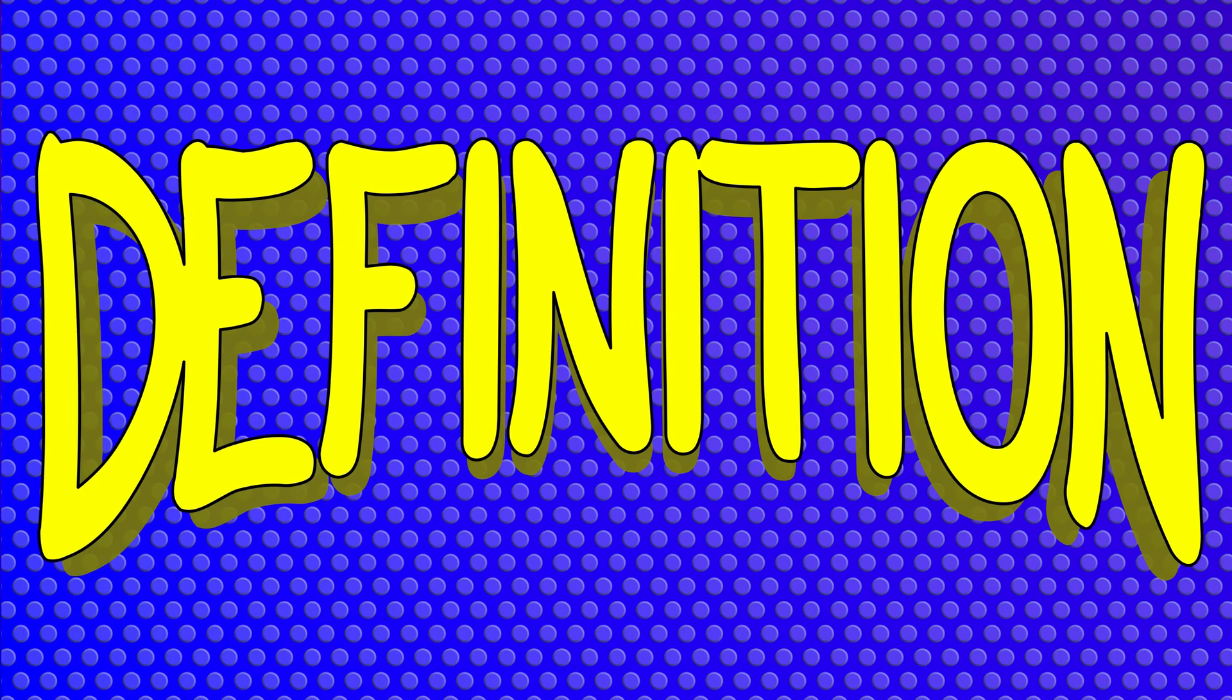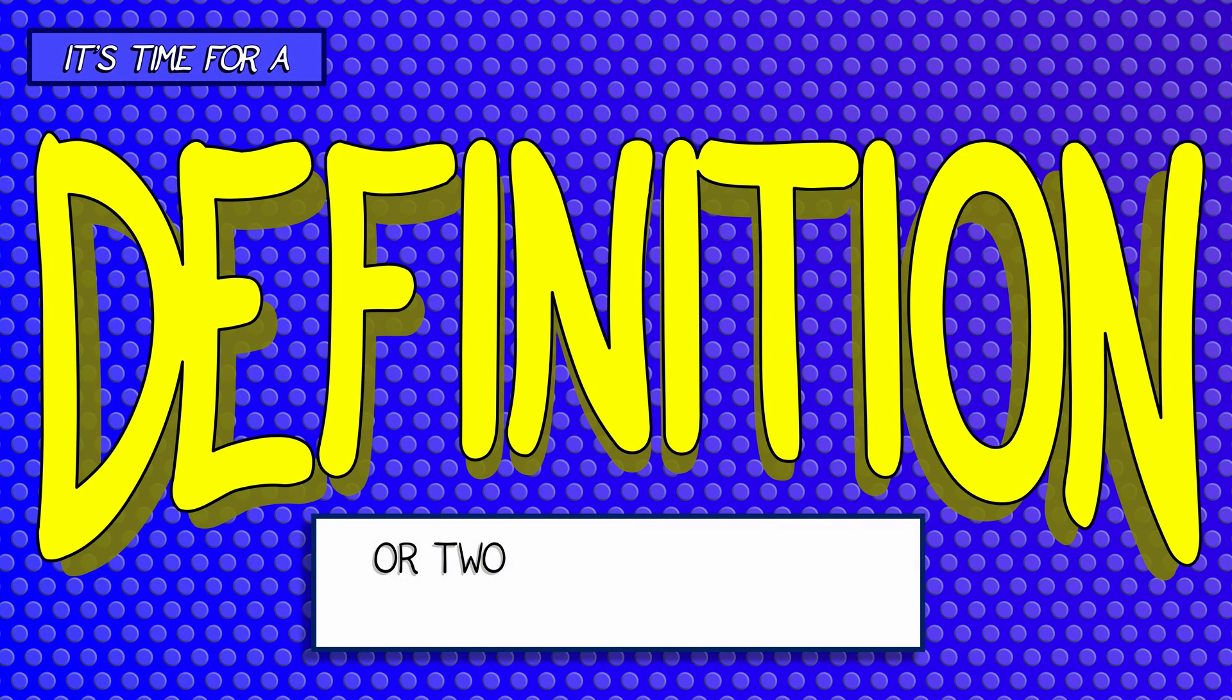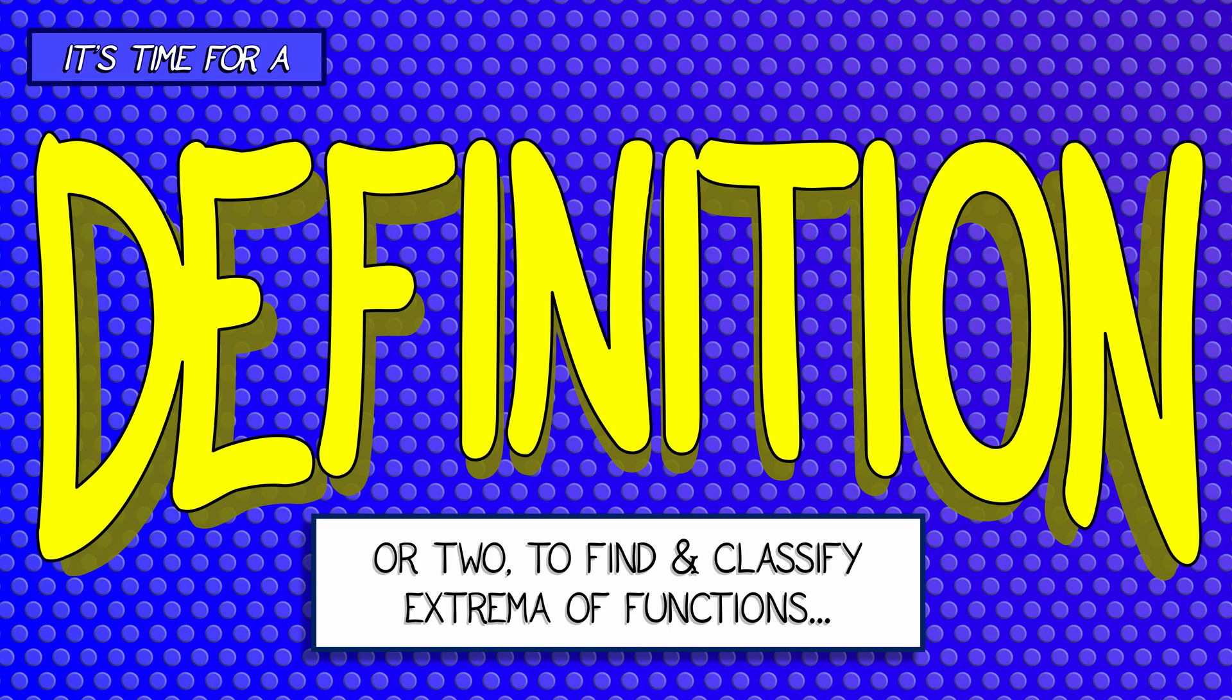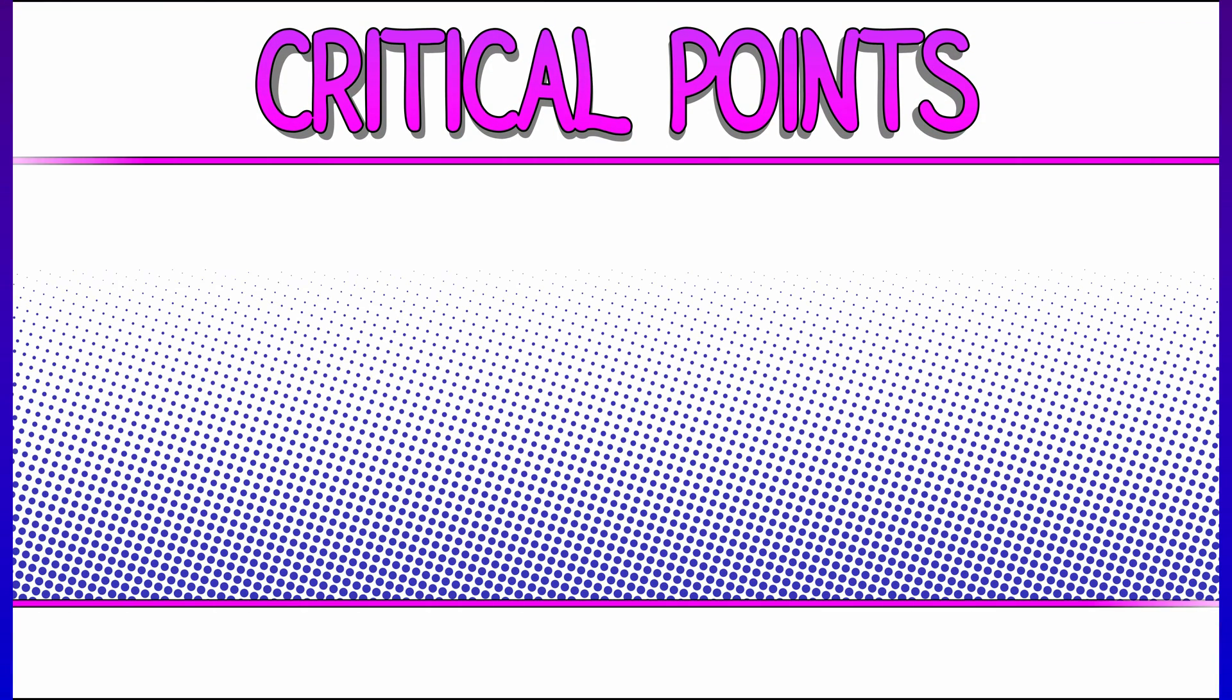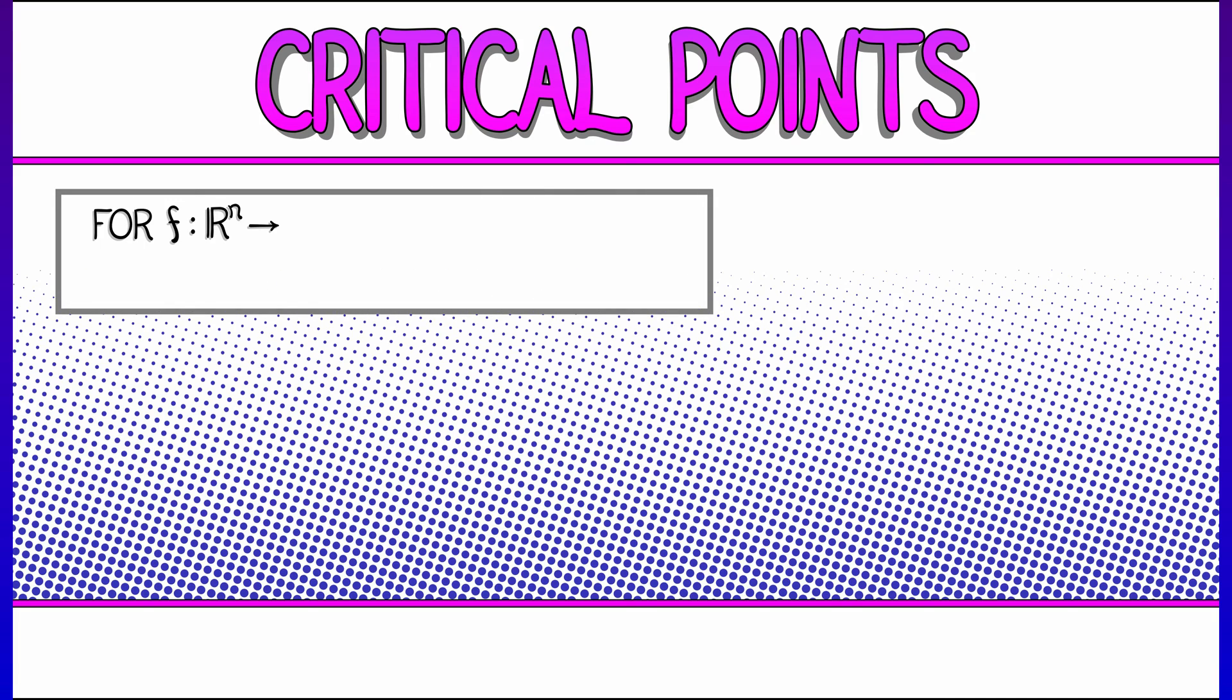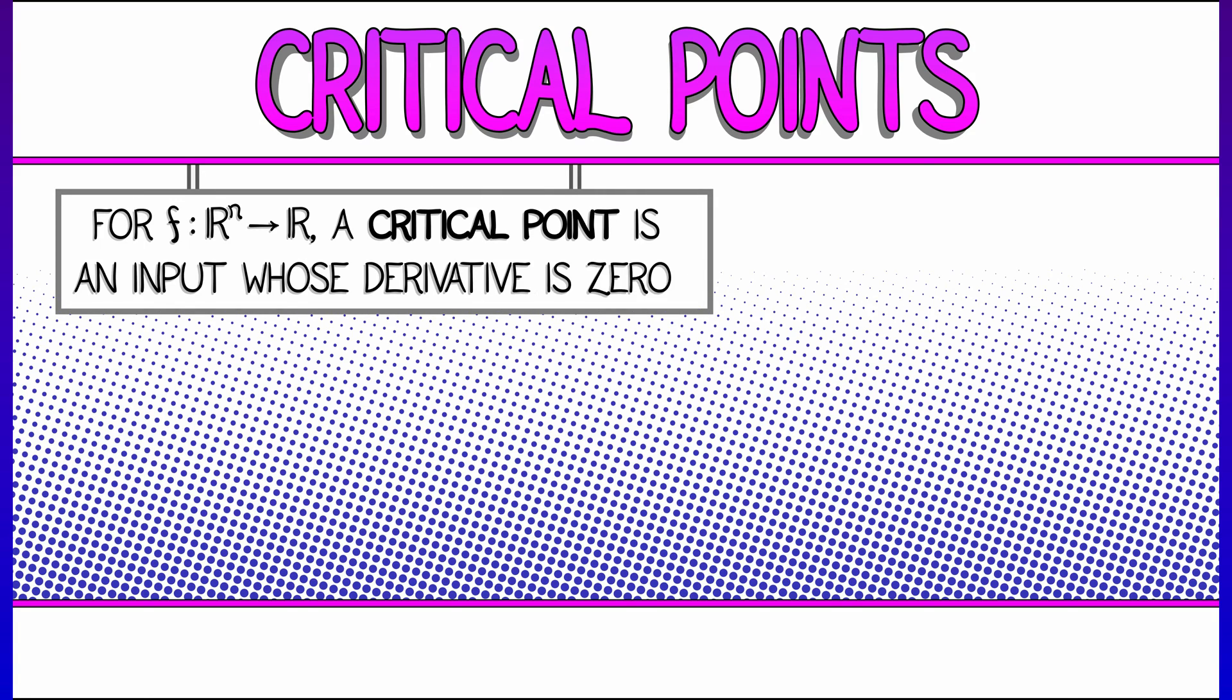So let's get started with a definition or two in order to find and classify critical points of functions. Our first definition is going to be that of a critical point. Let's say we have a function f, n inputs, one output. A critical point is a location, an input, where the derivative is either zero or undefined.